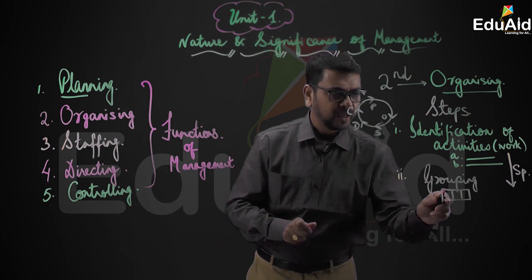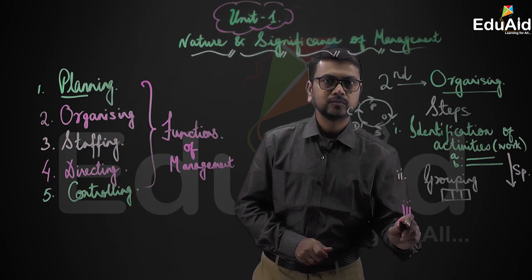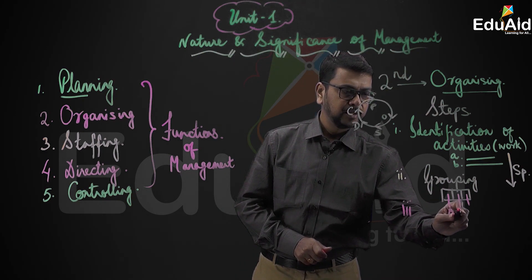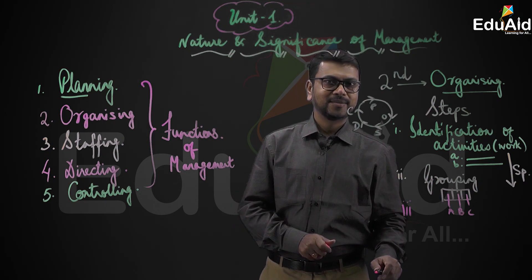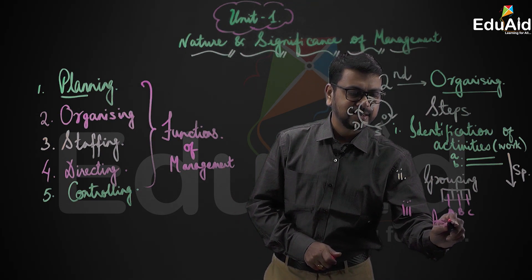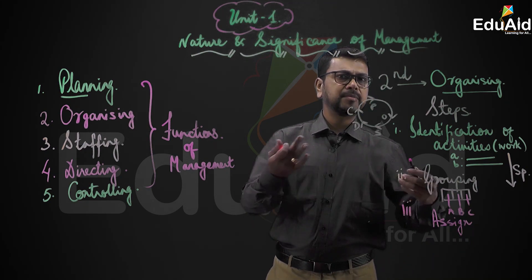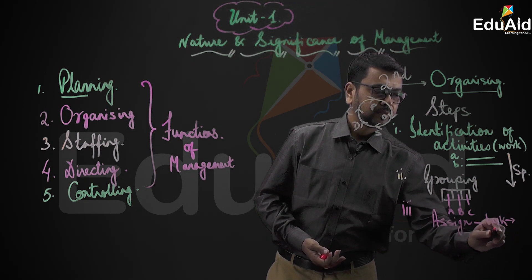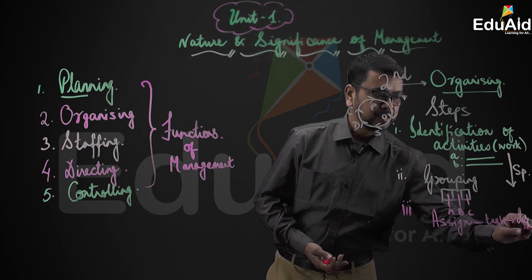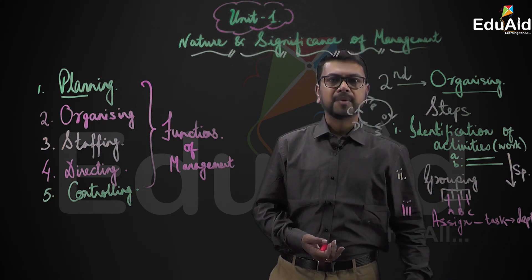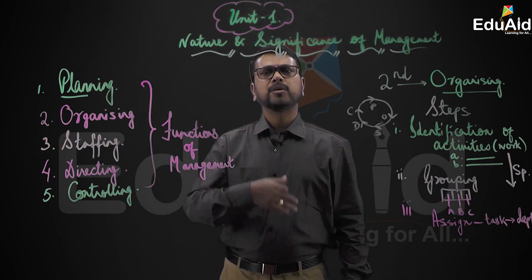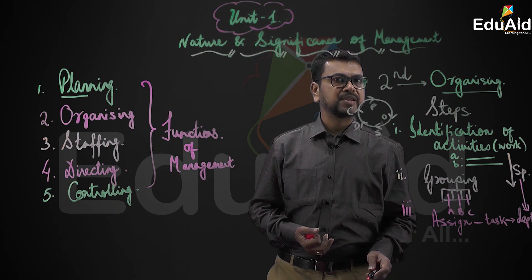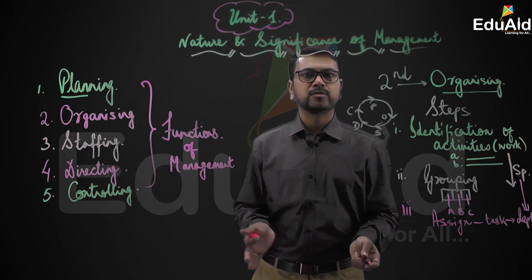After grouping, what will you do? Let's say we grouped the tasks into three groups: A, B, and C. You will assign the task — distribute it to the concerned department: finance, marketing, accounts, marketing research, sales, and so on. These departments are headed by and consist of specialists who qualified themselves to come into that position.